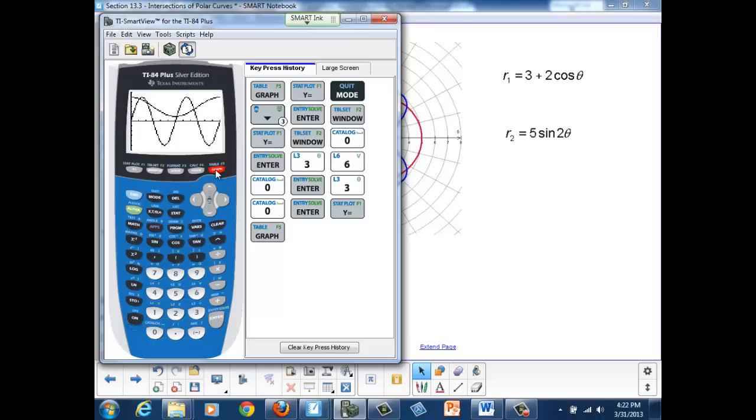Now, since x represents theta, these two graphs are showing what happens for every value of theta between zero and 360 degrees. And you can see that for particular values of theta, we have intersections.